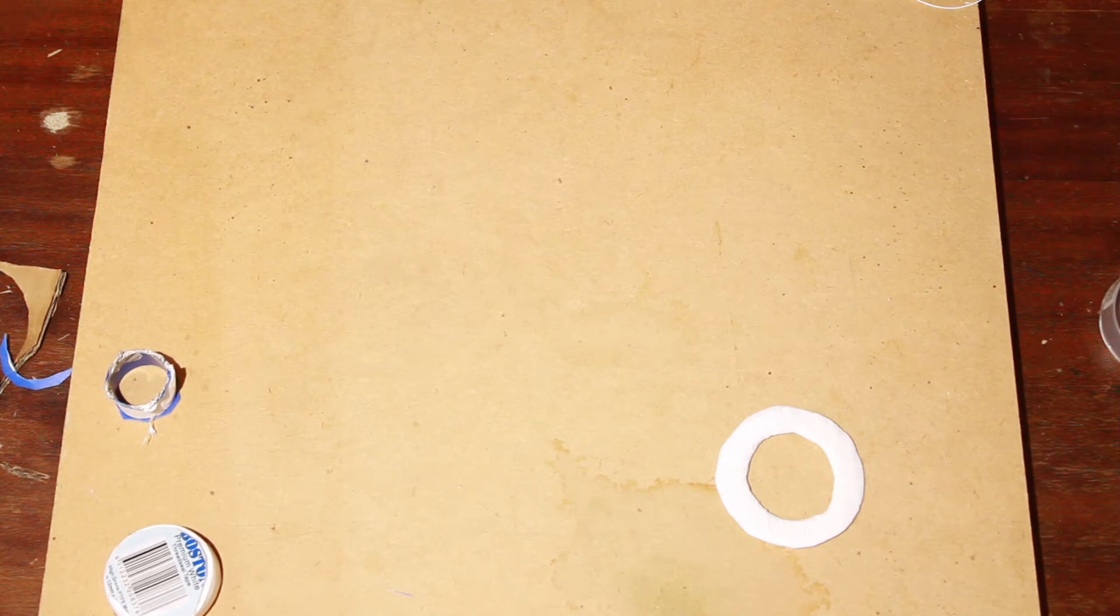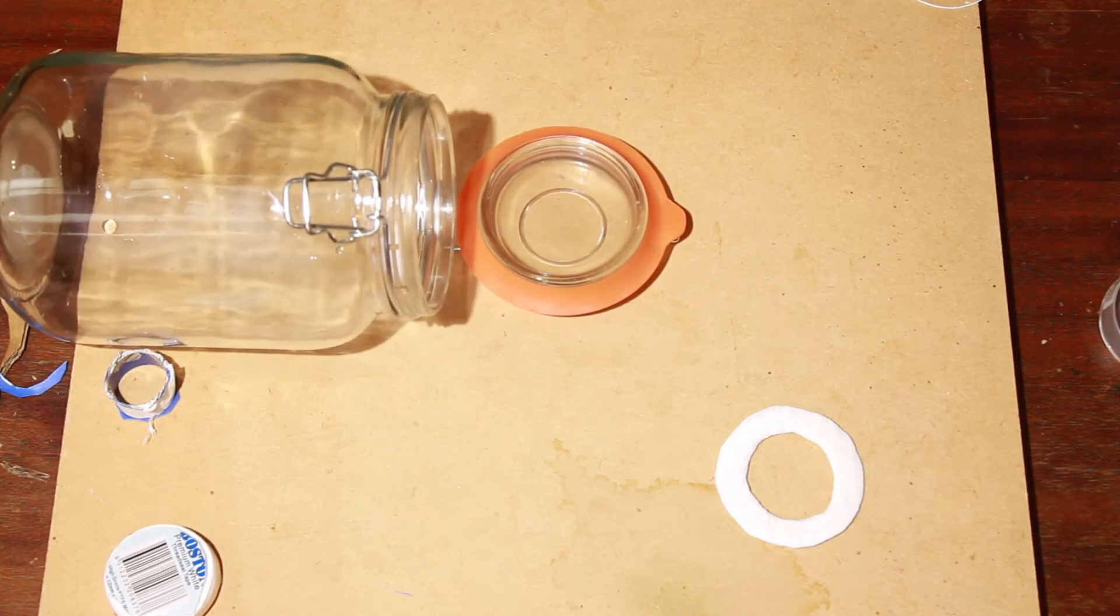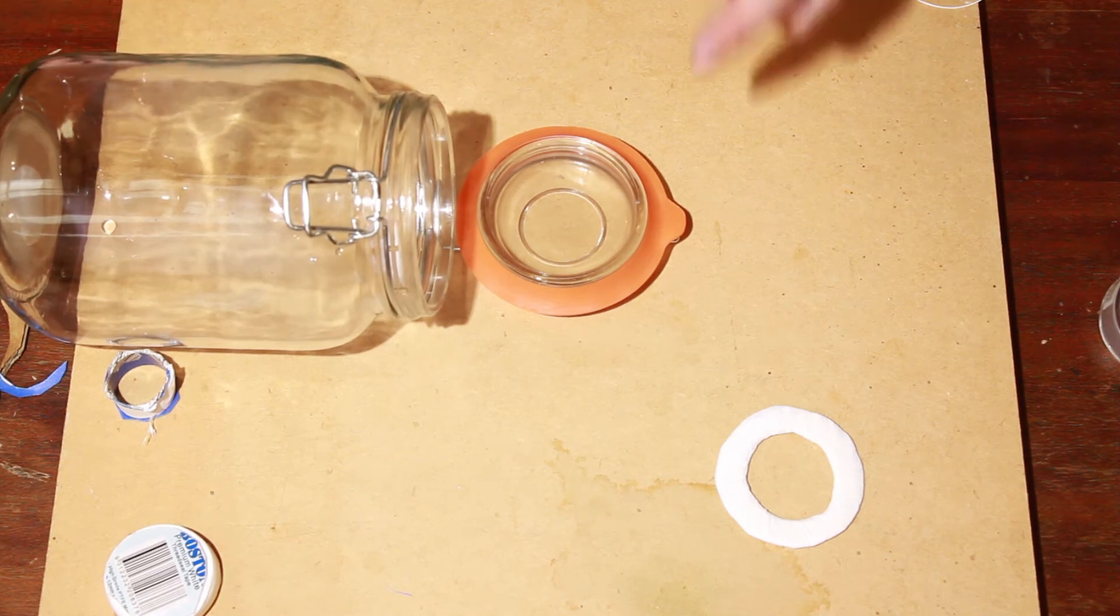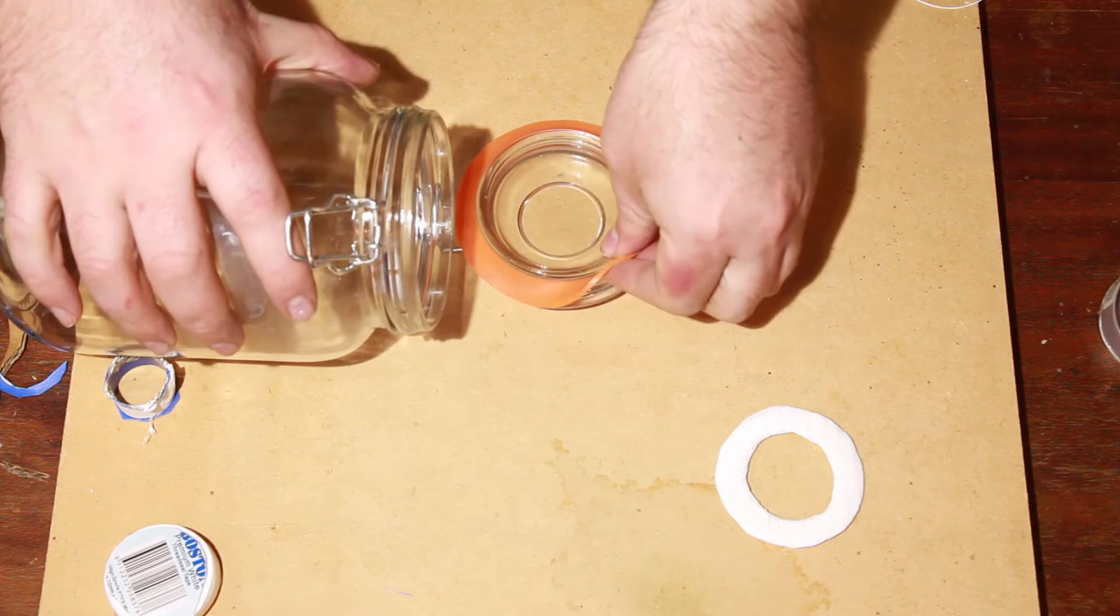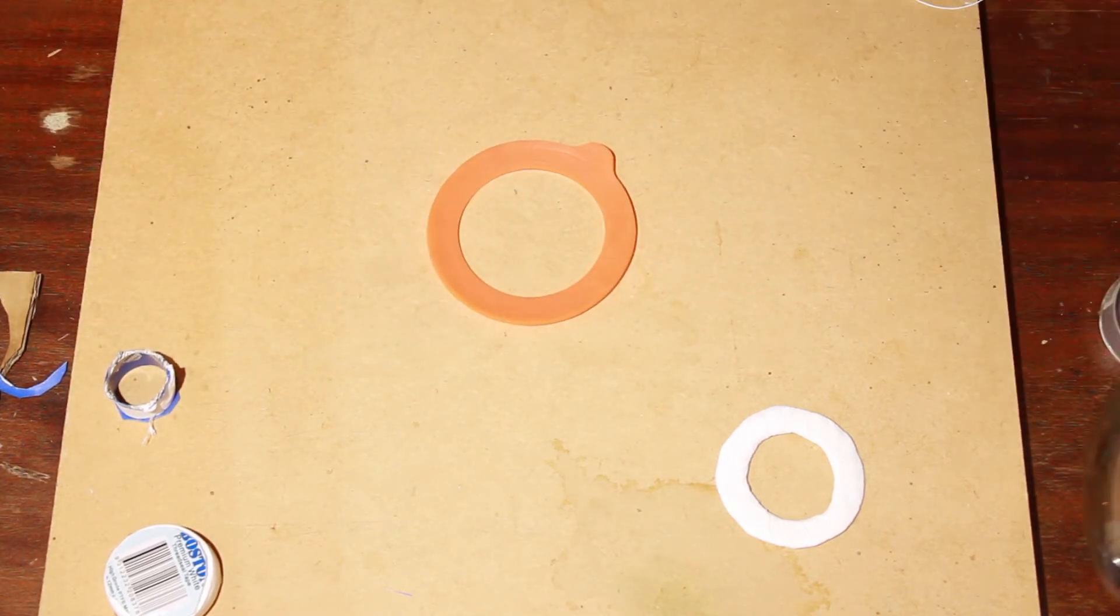The cool thing is you can use the same technique for all sorts of things. Here's a swing top glass jar which I want to store booze in, but I don't want the silicone gasket getting in touch with anything, so you can wrap that too.